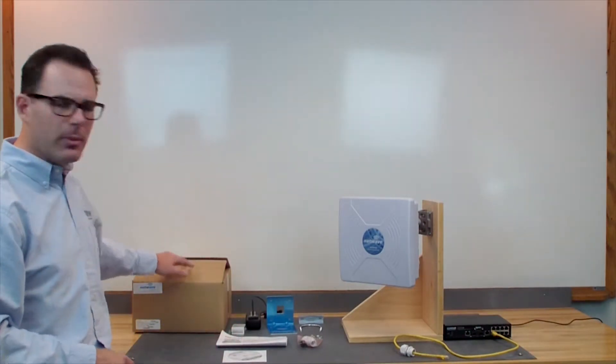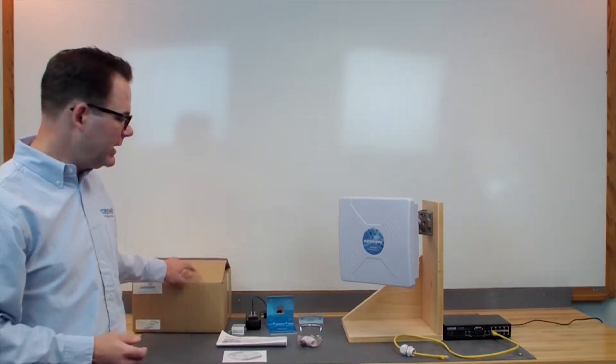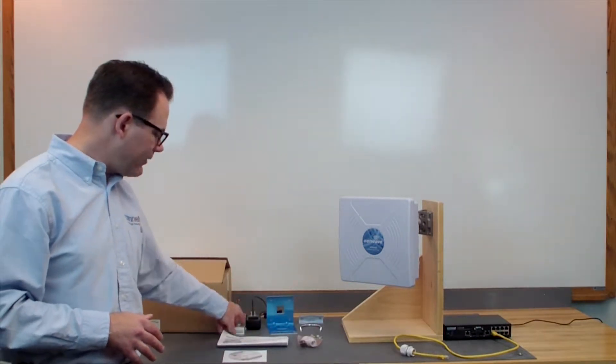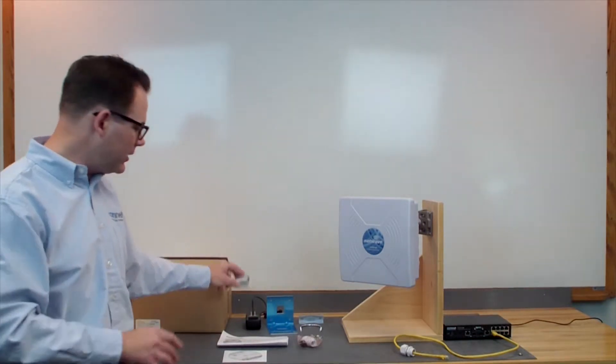To get started we're going to take a look at our two boxes and we're going to select the box that says AP or access point because that's essentially your receive location. Inside that box is again everything you need. Now we have documentation, a CD with instruction manuals and other product information. We have our included power injection module if you're not going to be using the POE aspect of the radio.